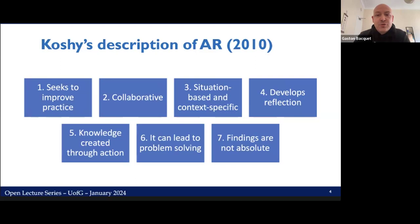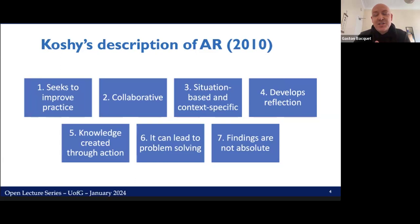Additionally, action research is meant to be both participative and collaborative. It is undertaken by individuals — the researcher and the participants — with a common purpose. It is situation-based and context-specific. It develops reflection based on interpretations made by researchers and participants. Knowledge is created through action: we begin by investigating which actions are needed, carry them out, reflect on what happened, and then engage in modified action. Action research can also lead to problem solving, and its findings are not conclusive or absolute — this is why it is cyclic and contains different iterations so practices can continue to be analyzed and improved upon.